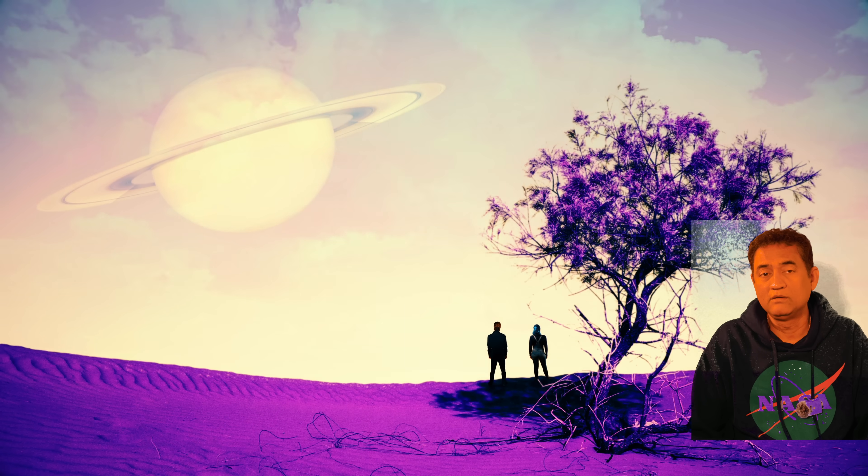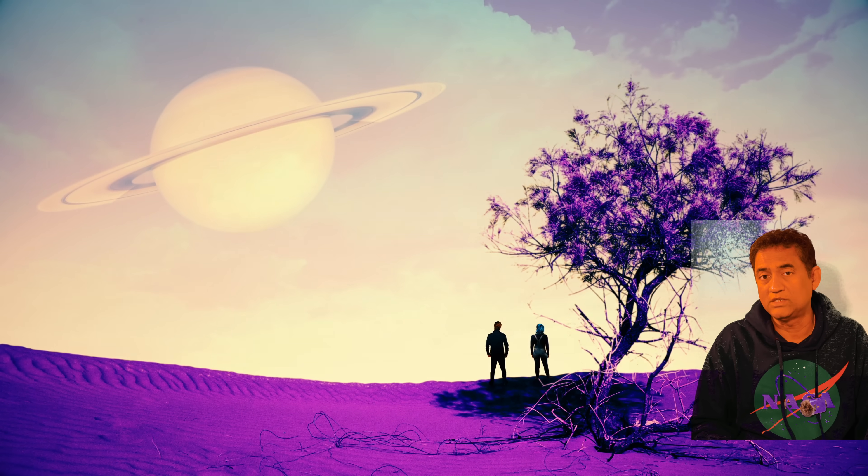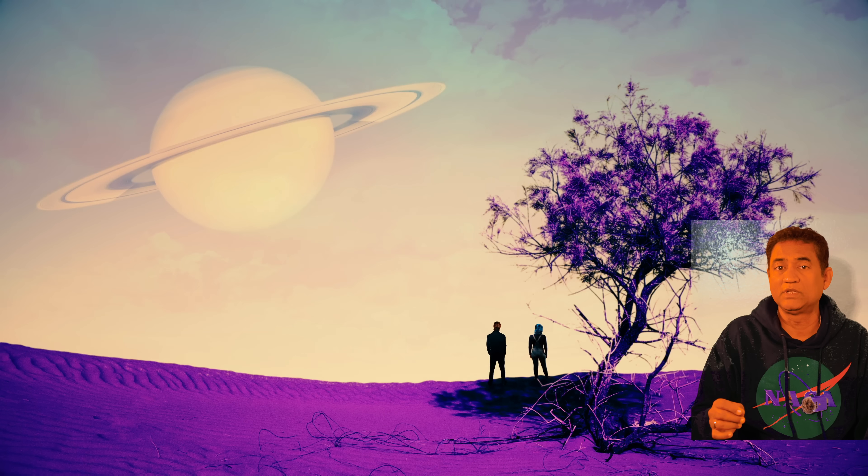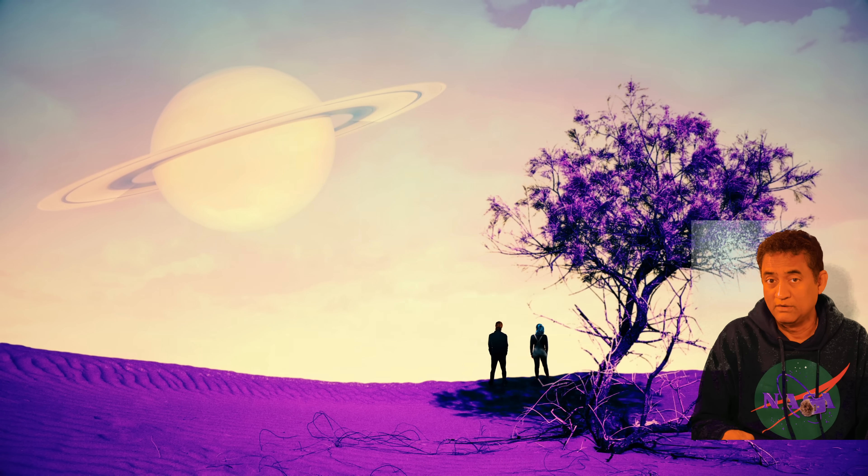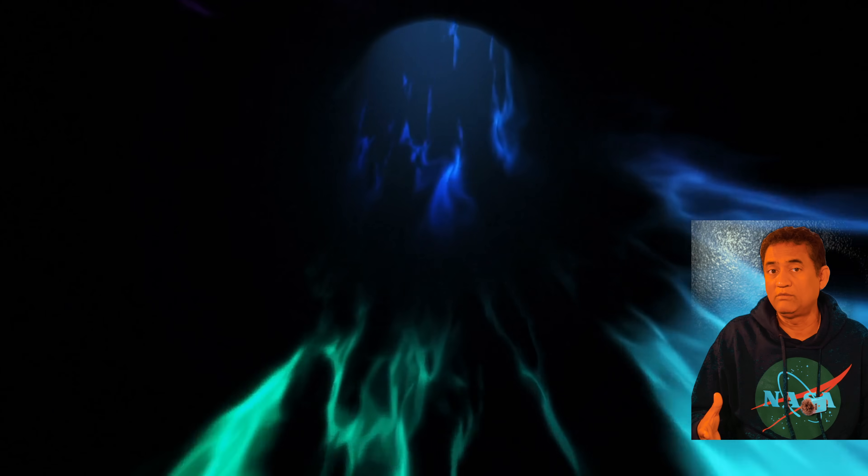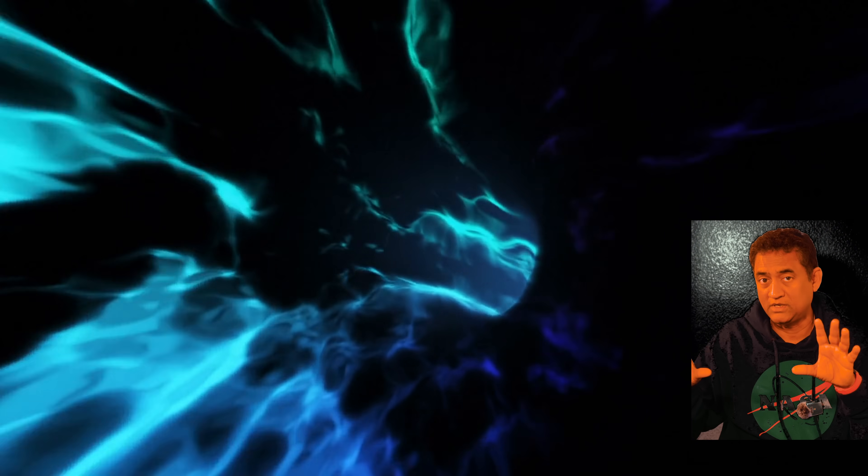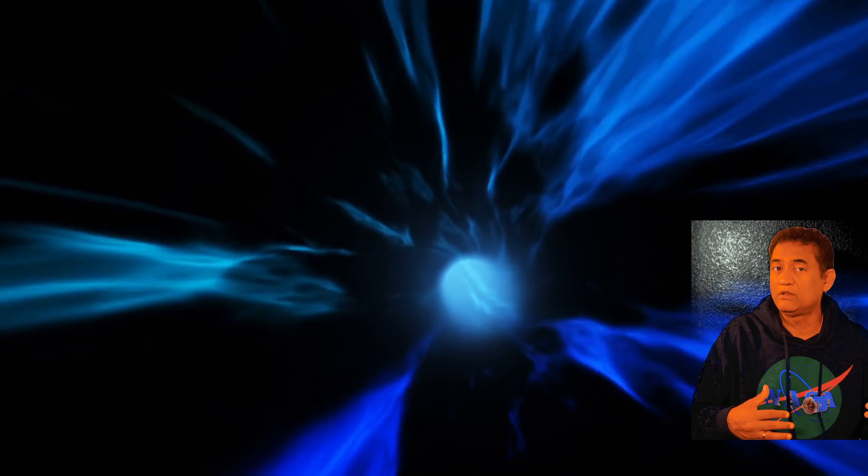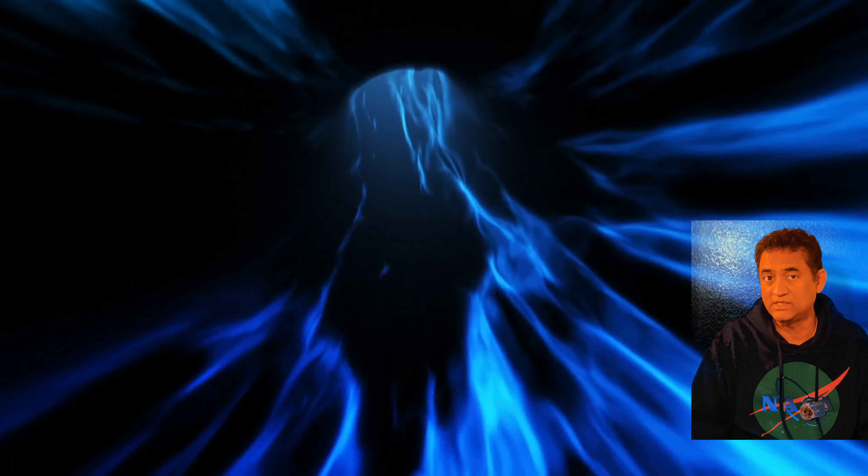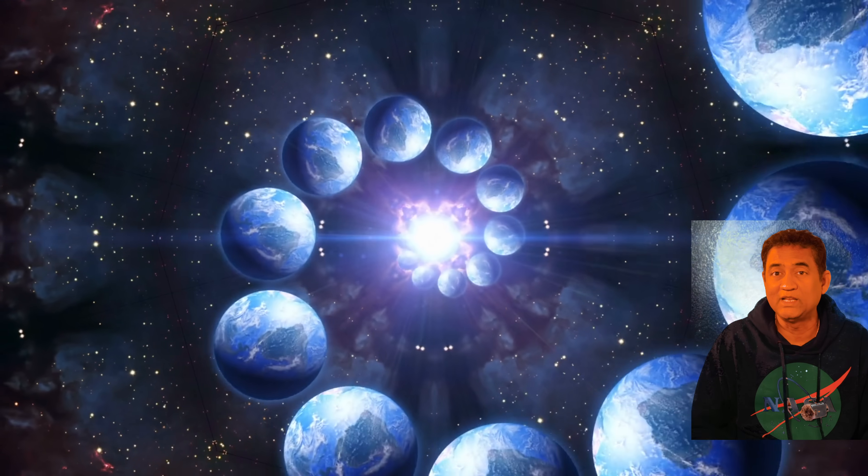What does this all mean to us? Why does this matter? Because every interstellar visitor carries with it the history of another star system. By studying the gases that are escaping from Atlas, we can figure out how planetary systems evolved. We can test our models of comet chemistry. We can compare whether we are unique or if other star systems make similar building blocks of life.